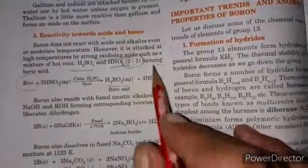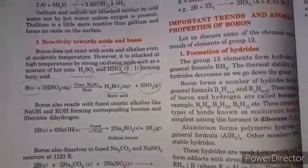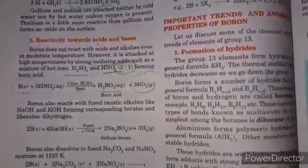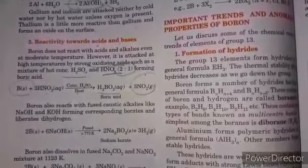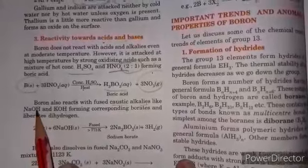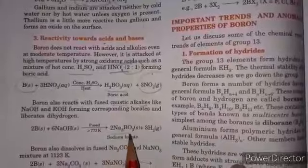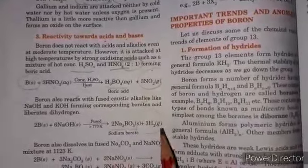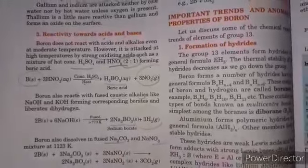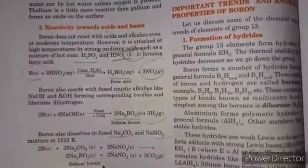When two strong alkalis mix and react with boron they form a borate. It is fused with caustic alkalis like potassium hydroxide and sodium hydroxide to form sodium borate and liberate hydrogen gas. Boron also dissolves in fused sodium carbonate and nitrate at high temperature to produce sodium borate.